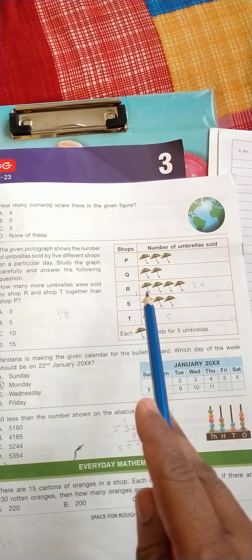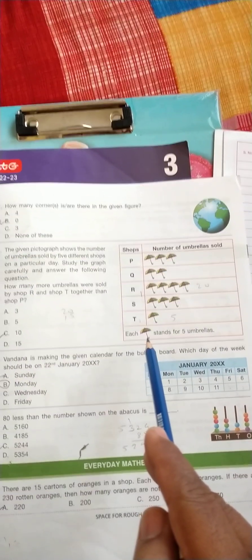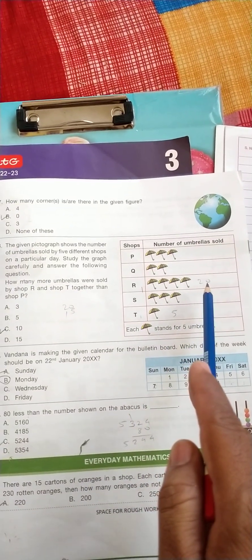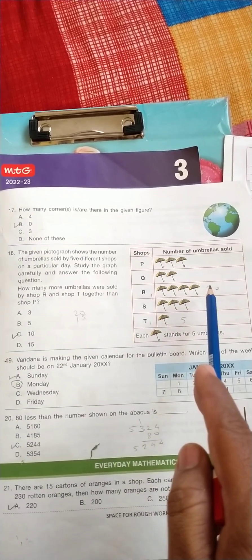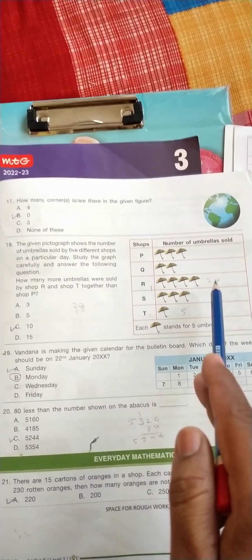So R and T - so R 1, 2, 3, 4, but each umbrella stand for 5 umbrellas, so here 4 into 5 equals 20, and in shop T only 1, so it means it's 5, total 25.